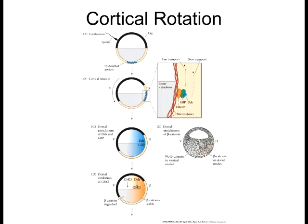That region where disheveled is pushed is going to be a key region later in the gastrulation process of Xenopus — that's where the organizer is going to form. As far as fertilization goes, the sperm can enter anywhere into the animal pole, but where it enters predetermines the ventral region, and the other side will be the dorsal region. This is where you get asymmetric distribution of maternal factors that influence cleavage and gastrulation movements.